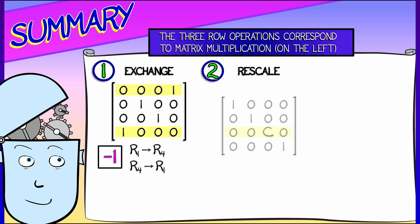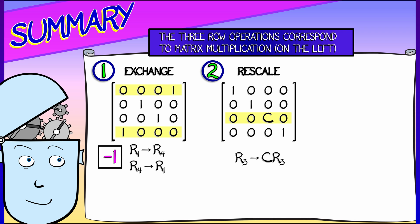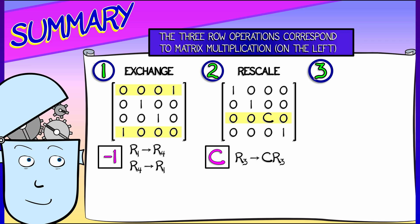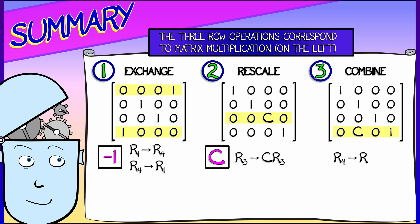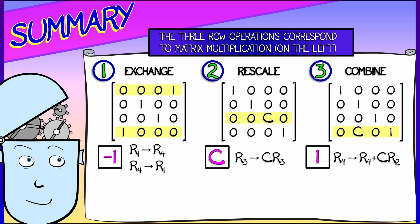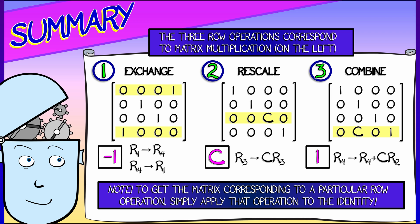The second row operation, where I multiply a row of the matrix by some constant c — what that does is it multiplies the determinant by that constant c. The third operation, where I take some multiple of a row and add it to another row, that multiplies the determinant by a factor of 1. That is, it does not change it at all.